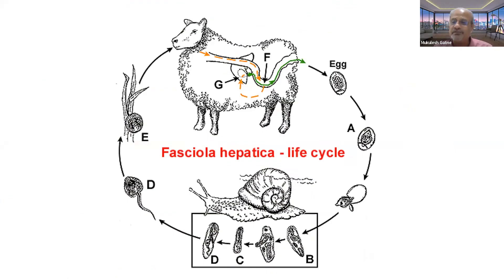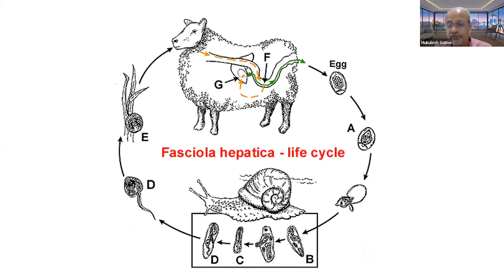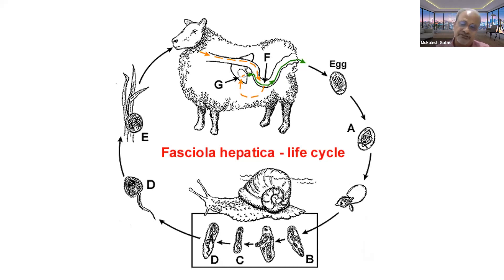The best way to prevent infection is to know about the life cycle patterns so that we can interrupt the life cycle at appropriate places or appropriate timings — understanding how animals get infected and which points can be tackled to control these infections.